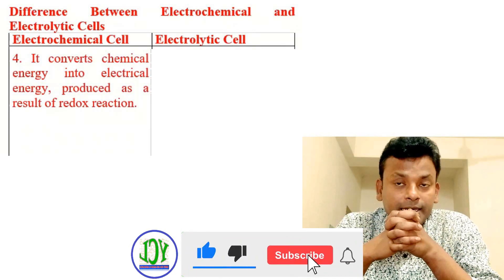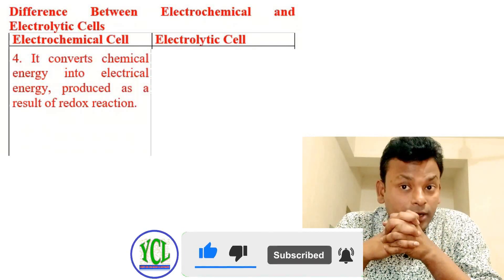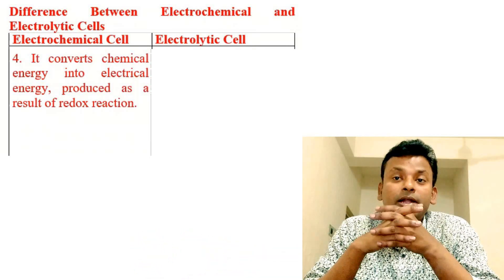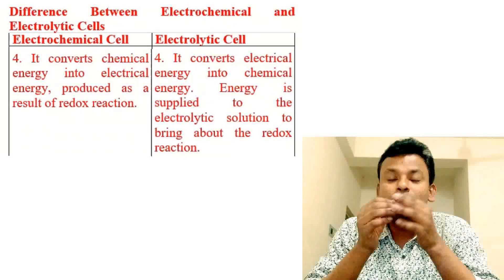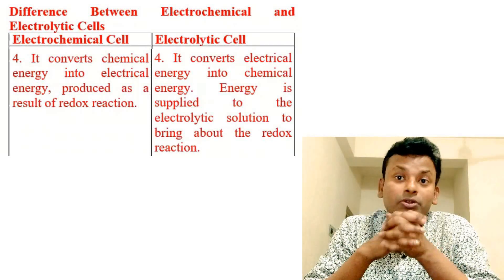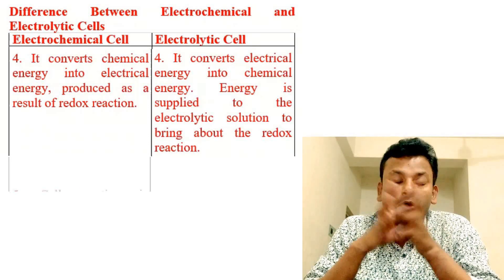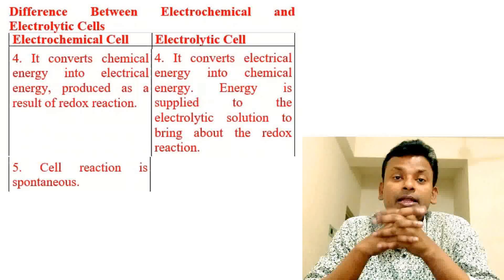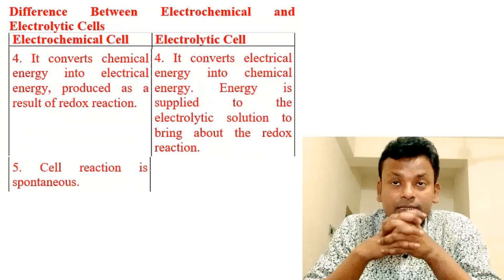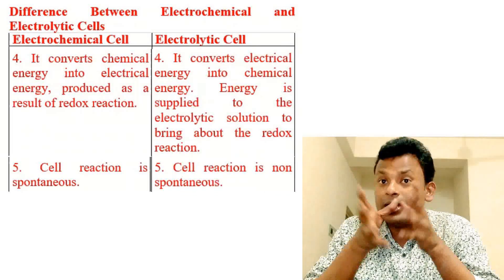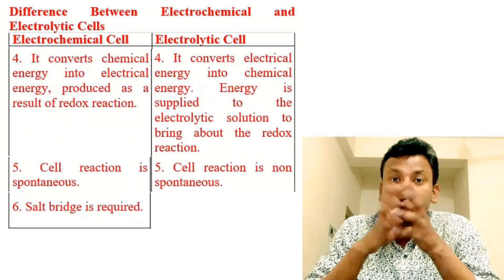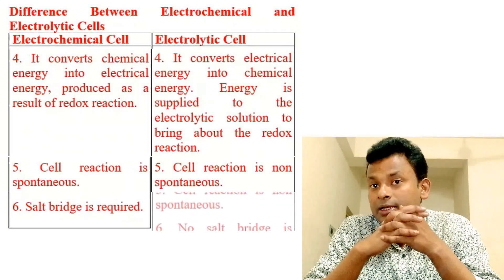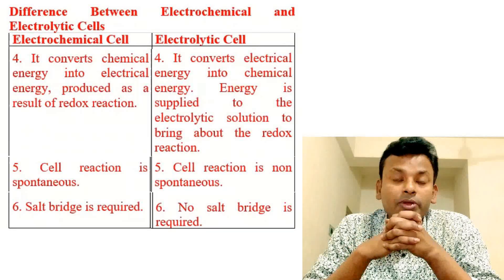Fourth, electrochemical cells convert chemical energy into electrical energy as a result of a redox reaction; electrolytic cells convert electrical energy into chemical energy — energy is supplied to the electrolytic solution to bring about the redox reactions. Fifth, in an electrochemical cell the cell reaction is continuous; in an electrolytic cell the cell reaction is non-continuous. Sixth, in an electrochemical cell a salt bridge is required; in an electrolytic cell no salt bridge is required.